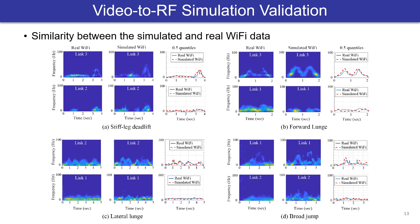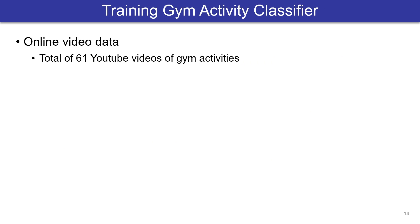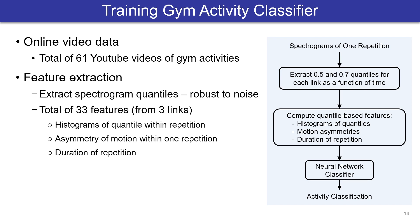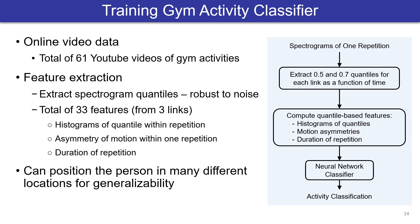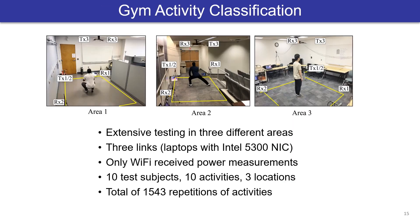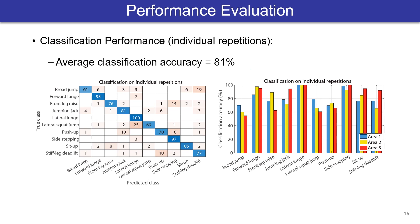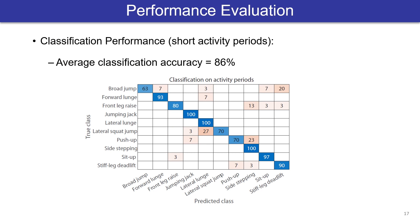We validate our video-to-RF framework. Here are the spectrograms for the real and video-generated RF data for 4 activities. The real and simulated ones match closely. Once we generate our RF training set, we extract a total of 33 features from their spectrograms to train a neural network classifier. We also position the person in many different locations to make training data more general. We extensively tested our trained model with 10 test subjects in 3 real Wi-Fi environments and a total of 1,543 repetitions of activities. We achieve a classification accuracy of 81% when testing on individual workout repetitions. By fusing the classifications on multiple consecutive repetitions of the same exercise, our accuracy increases to 86%, which is comparable to the state-of-the-art in RF-based gym activity classification but without using any real Wi-Fi data for training.